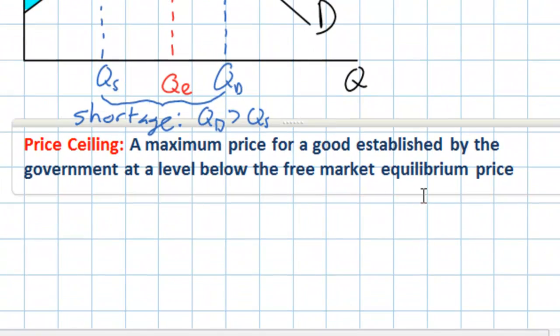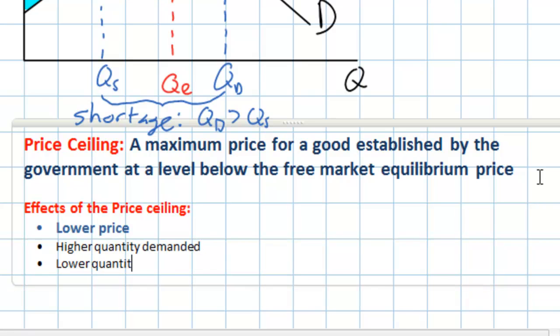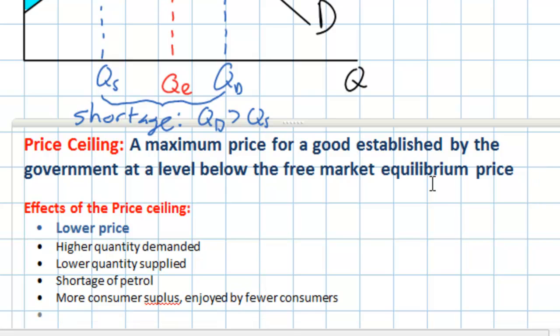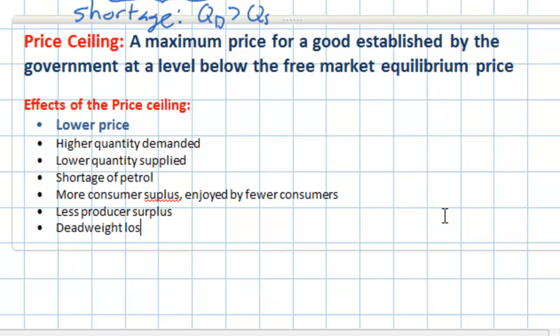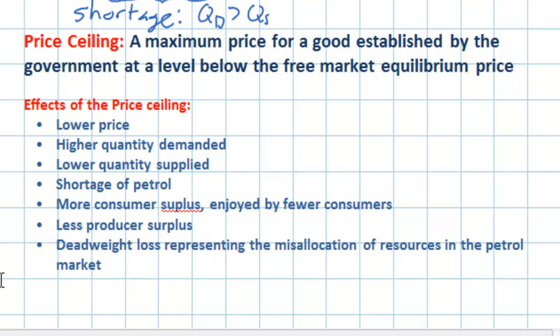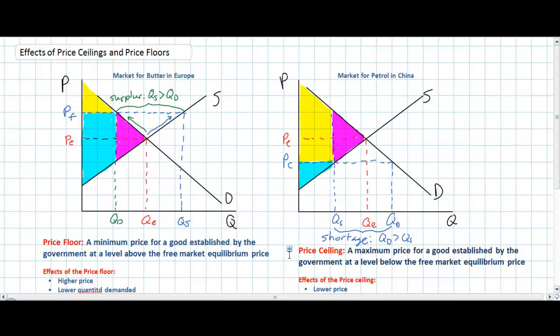Let's summarize the effects of a price ceiling on the market for petrol. A price ceiling will result in a lower price, a higher quantity demanded, and a lower quantity supplied. The disequilibrium means there is a shortage of petrol in China. There will be more consumer surplus, but enjoyed only by those who are able to buy petrol — more consumer surplus enjoyed by fewer consumers. There is less producer surplus, and overall there is a deadweight loss representing the misallocation of resources, with resources under-allocated towards petrol. In conclusion, consumers benefit from a price ceiling, producers benefit from a price floor, but in both cases there is a net loss of total welfare equal to the purple triangles. Therefore, price controls are inefficient due to the misallocation of resources that results from them.